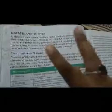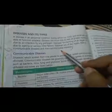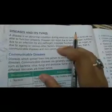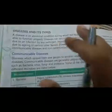Diseases are of two types: communicable diseases and non-communicable diseases. Communicable diseases are those diseases which can spread from one person to another — for example, viruses like COVID, which spread from one person to another. Non-communicable diseases are those diseases that cannot spread or be transferred from one person to another.